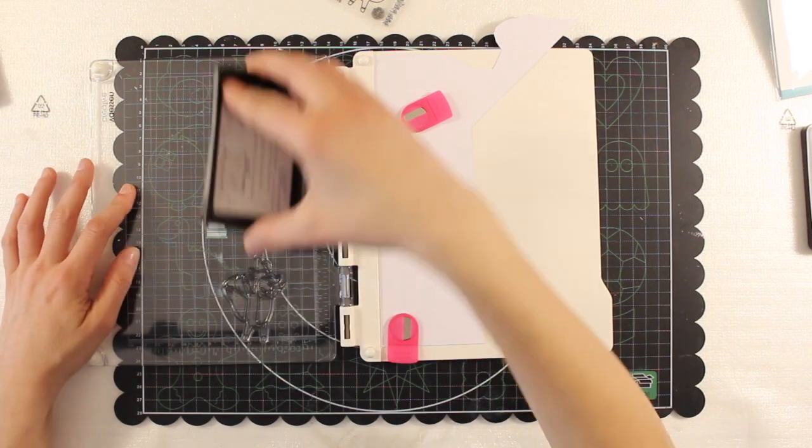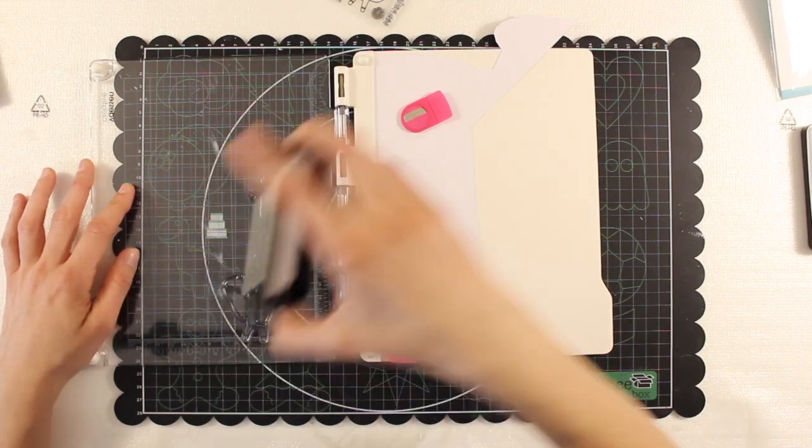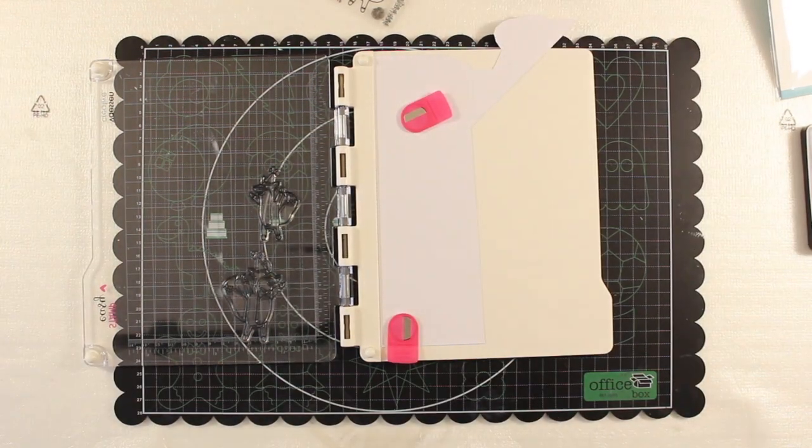One of the techniques I'm going to use is the embossing so I'm going to ink up the stamps with my Versamark clear ink for embossing.